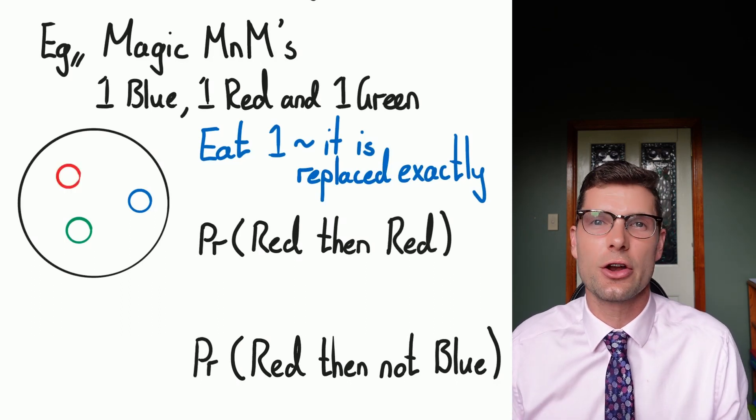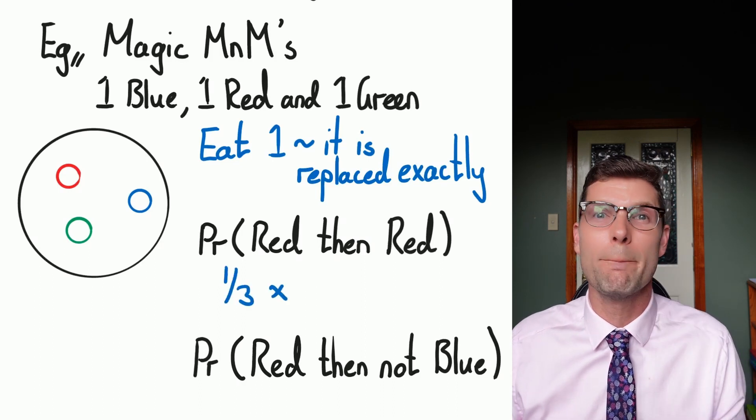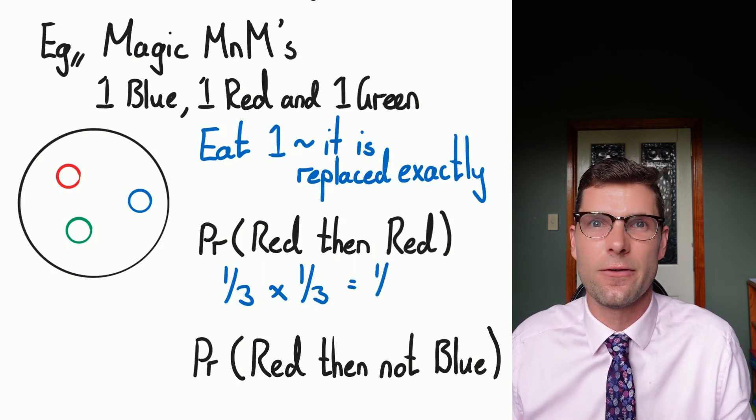For this, all you've got to do is a third, because that's the chance of getting the red the first time, multiplied by a third, which equals one over nine. That's your final answer.